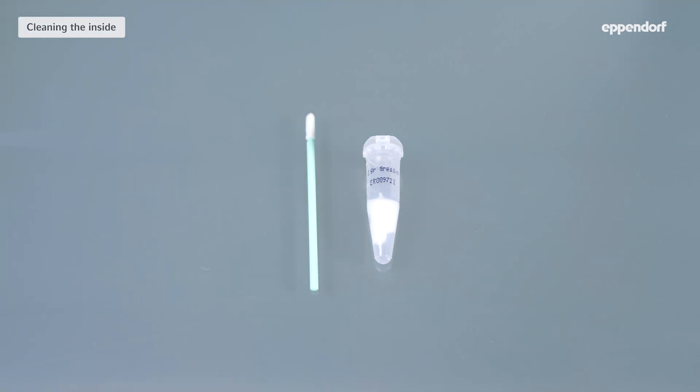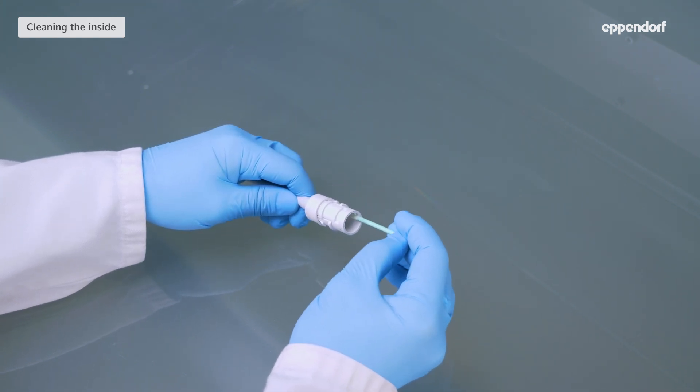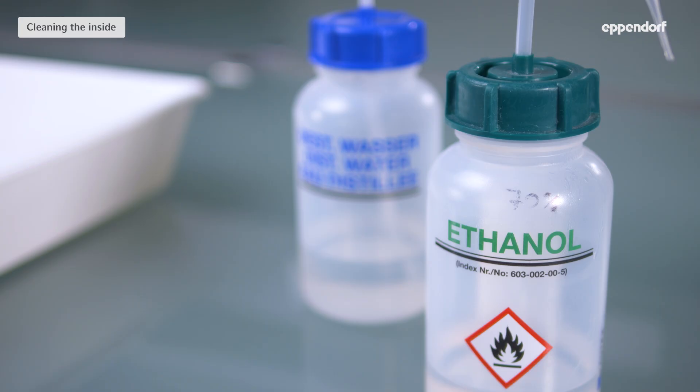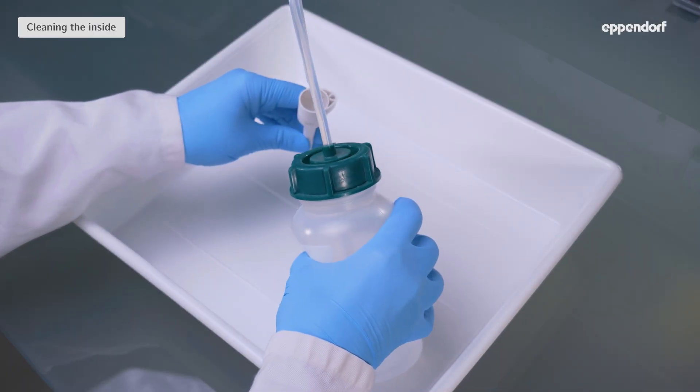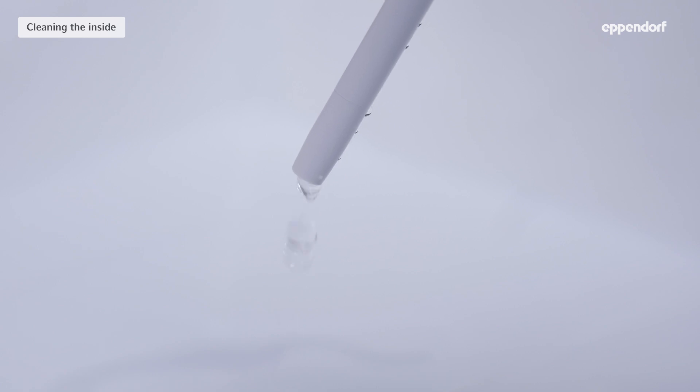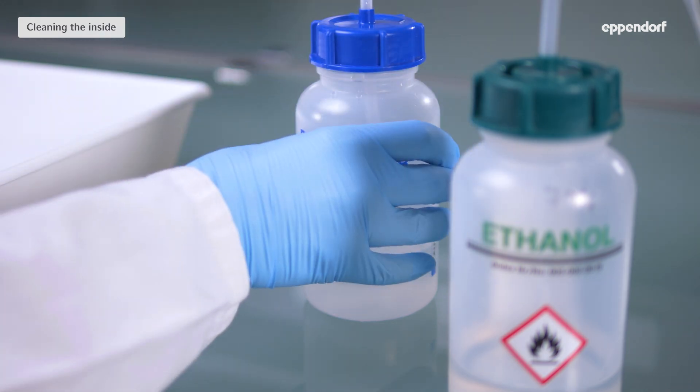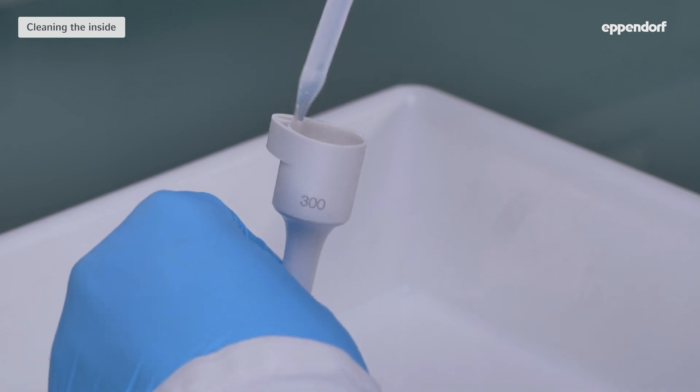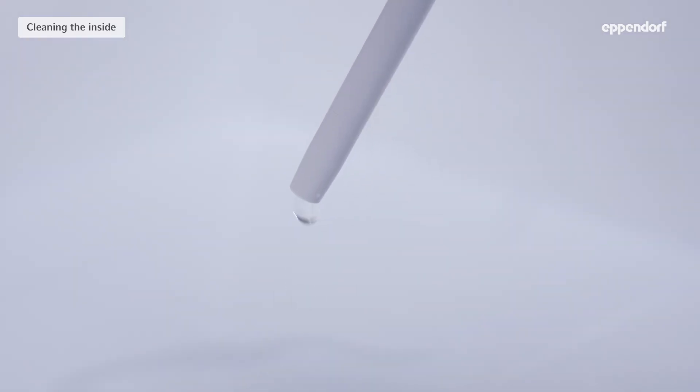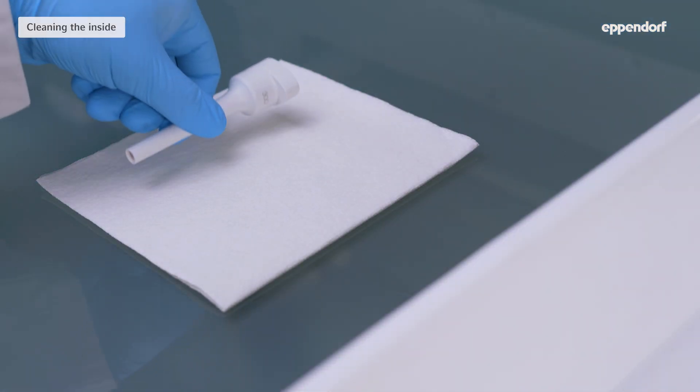Use a fine cotton swab to remove the piston grease from the cylinder wall. Rinse the lower part and ejector sleeve with a cleaning agent or immerse the parts according to the cleaning agent manufacturer's instructions. Rinse off the cleaning agent with distilled water and leave the parts to dry.